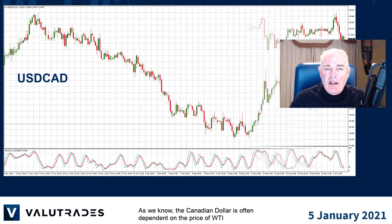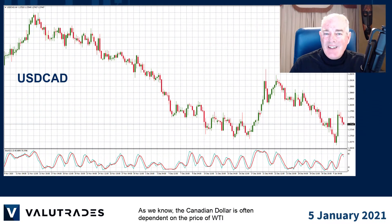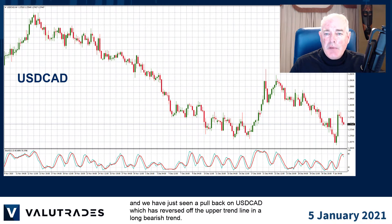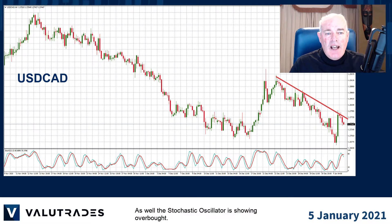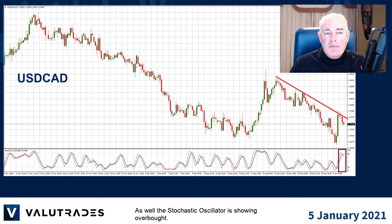As we know, the Canadian dollar is often dependent on the price of WTI, and we've just seen a pullback on USDCAD which has just reversed off the upper trend line in a long bearish trend. As well, the stochastic oscillator is showing us overbought.